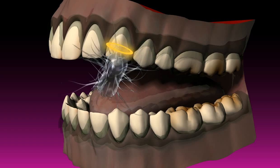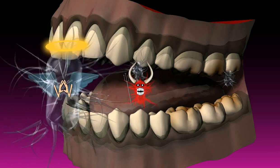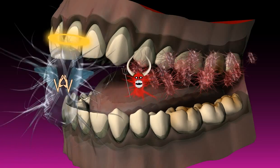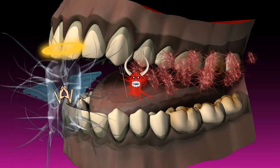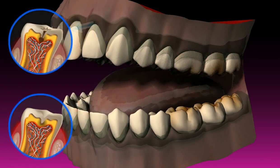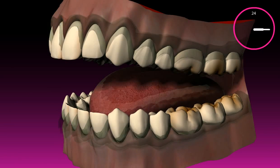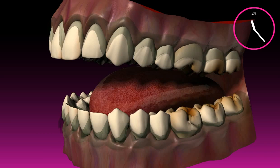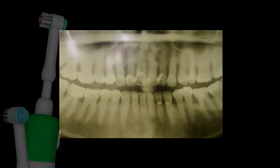By themselves, these bacteria are not harmful. The damage only occurs when they are organized in the form of plaque, or ultimately in the form of caries and/or periodontitis. Disease-causing plaque develops within 24 hours, so it's important to inhibit the formation of plaque because it's the only way for your teeth to remain healthy.